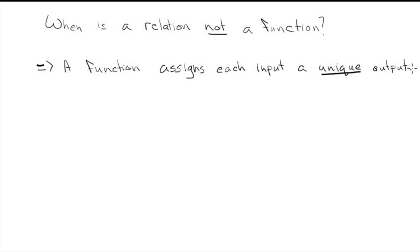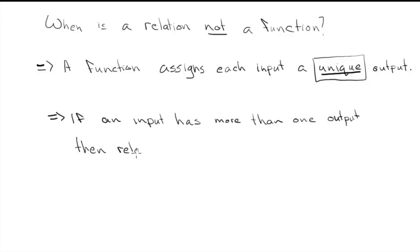So basically a relation won't be a function when the input is not assigned a unique output. So what does that mean? It's assigned more than one output. So if an input has more than one output, then the relation is not a function.